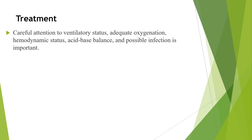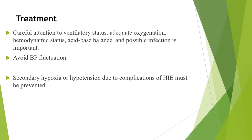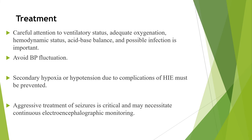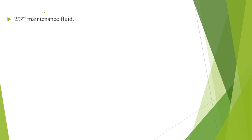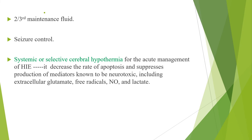Regarding treatment: careful attention to ventilatory status, adequate oxygenation, hemodynamic status, acid-base balance, and possible infection is important. We should avoid blood pressure fluctuations, and secondary hypoxia or hypotension due to complications of hypoxic ischemic encephalopathy must be prevented. Aggressive treatment of seizures is critical and may necessitate continuous EEG monitoring. Since such patients are at risk of cerebral edema, we should give two-thirds of the maintenance fluid. Seizure control with anticonvulsants like phenobarbital and phenytoin should be given. Systemic or selective cerebral hypothermia for the acute management of HIE is very important — it decreases the rate of apoptosis and suppresses production of neurotoxic mediators including extracellular glutamate, free radicals, nitric oxide, and lactate.